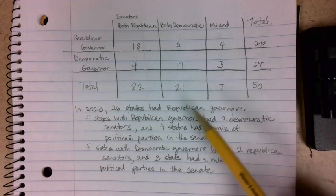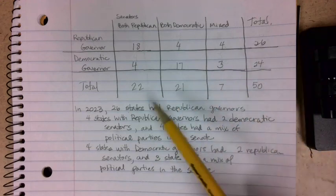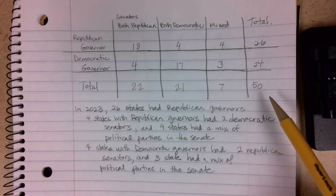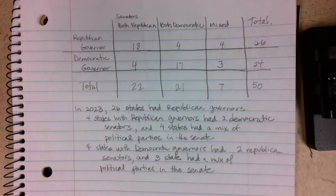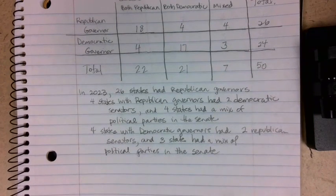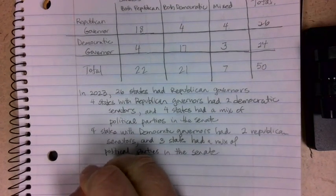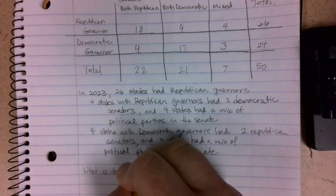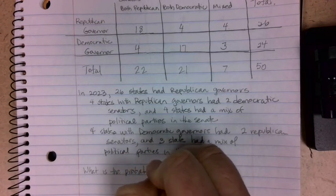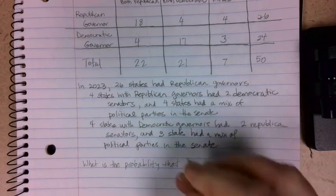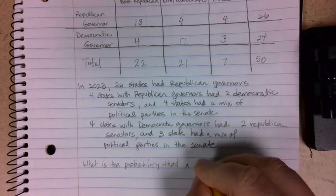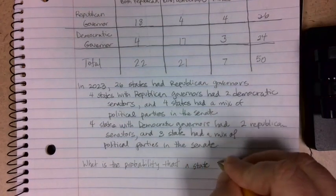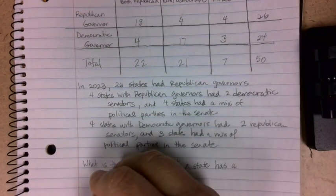This is how you take given information and use it to fill in a contingency table. Once we have this information, we can figure out a series of probabilities. First: what is the probability that a state has a Democratic governor?